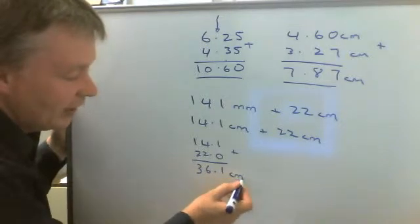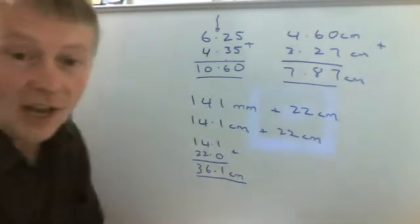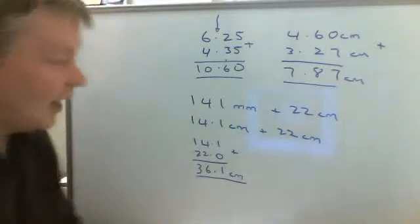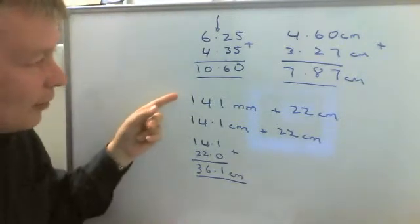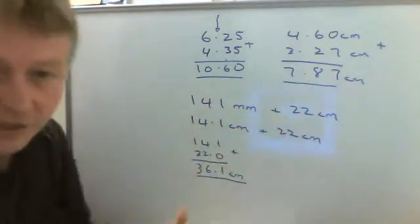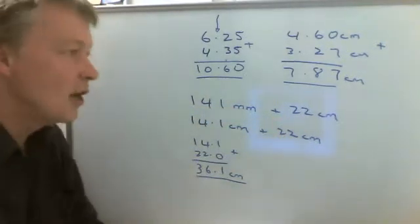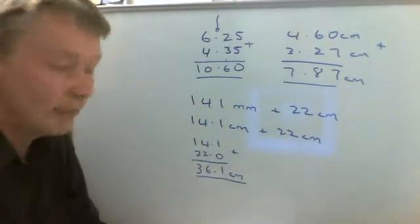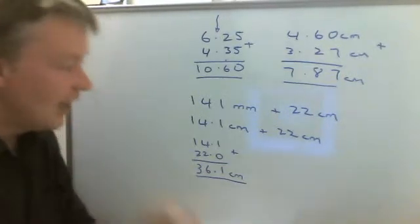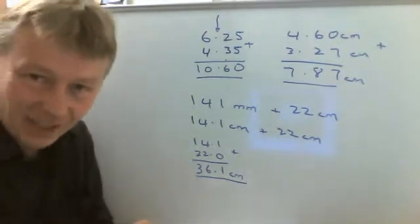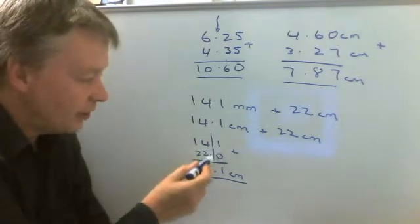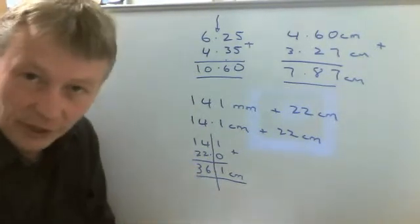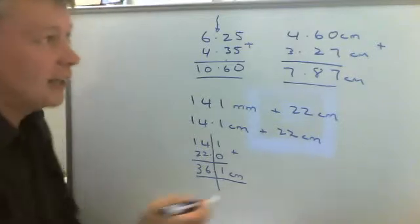There is a separate video on converting from different units, say millimeters to centimeters or meters to kilometers and that sort of thing. However, for the purposes of adding decimals, the two key factors are to make sure that you keep your decimal points in the same place and you also make sure there are the same number of numbers after the decimal points in order to add them together.